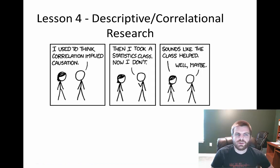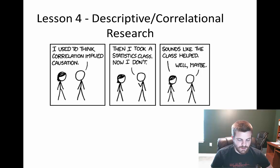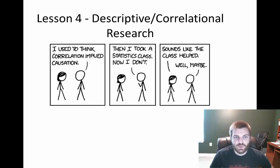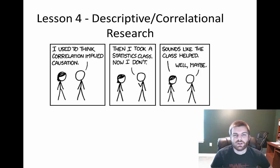There's a quick cartoon here about correlational method: 'I used to think correlation implied causation, then I took a statistics class and now I don't.' 'Sounds like the class helped.' 'Well, maybe.' So the statistics class could have helped this person understand correlation and causation, but it didn't necessarily cause it — that's why it's implying correlation as opposed to causation.